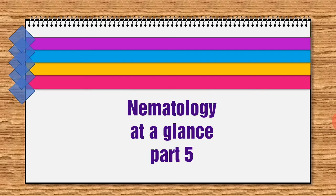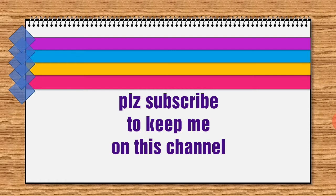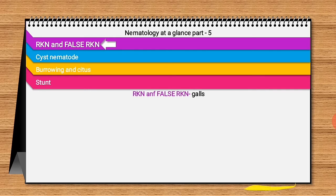Hi, I'm Priyanka from Entomology Coaching. Let's talk about nematology part 5, which includes nematodes and the diseases they cause. This is quite important for all competitive exams. First one is Meloidogyne and Nacobbus batatiformis — root knot and false root knot — both of them cause galls on the roots.